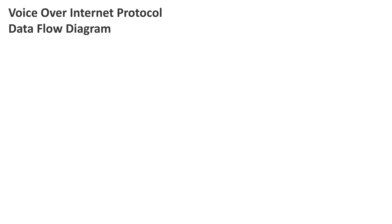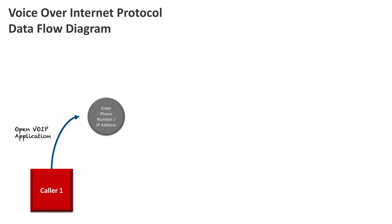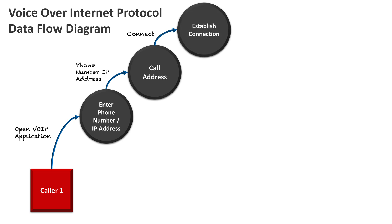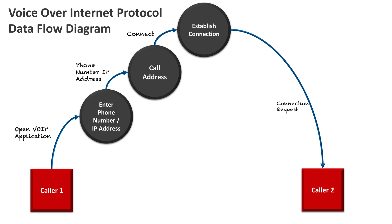Now let's build upon this with the data flow diagram. Starting again with Caller 1: they open the app and enter the phone number or IP address they wish to call. The system calls that address to connect to Caller 2. Caller 2 sees the request, answers the phone, accepts the request, and then the connection is established.